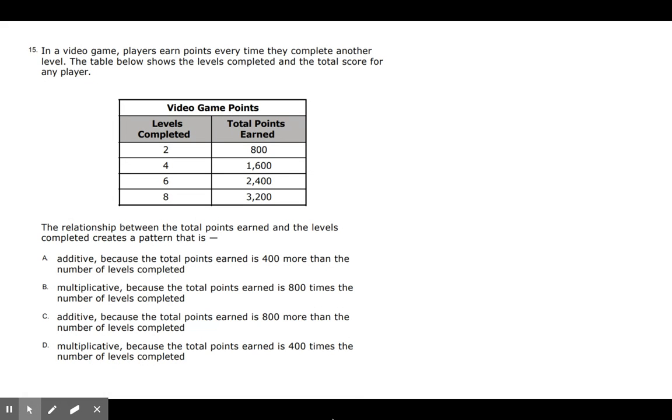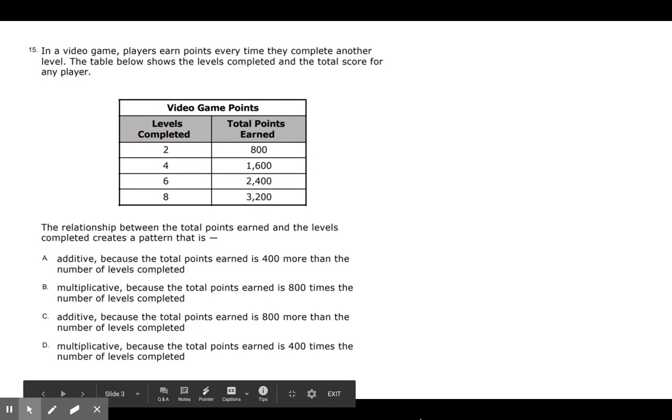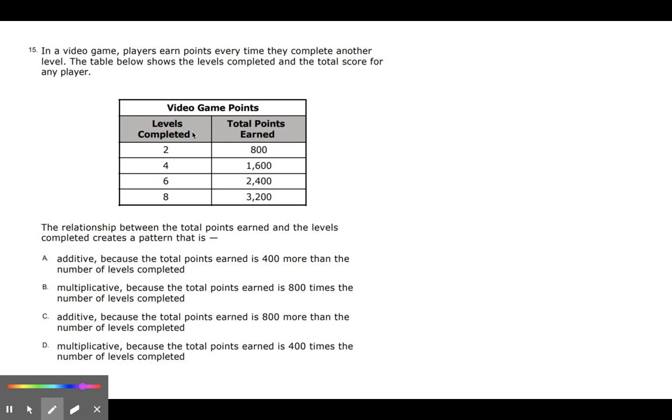Next one. Number 15. In a video game, players earn points every time they complete another level. The table below shows the levels completed and the total score for any player. And I'm looking at the relationships here because I'm going from 2 to 800. Interesting. The relationship between the total points earned and the levels completed creates a pattern that is additive, multiplicative, additive, multiplicative. So if I get rid of one of those, that actually puts me down to a 50-50, right? It could be one or two questions.